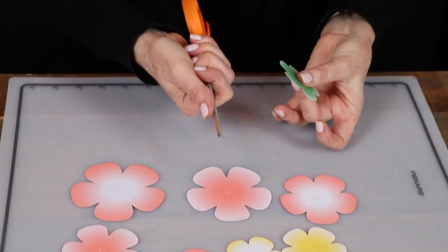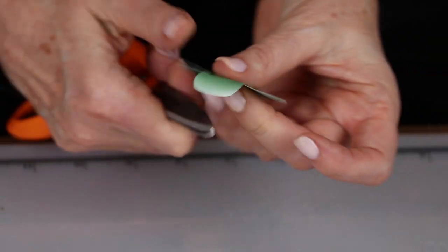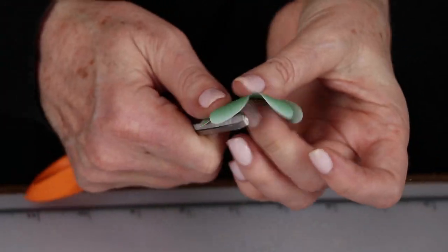The next thing you'll do is use the edge of your scissors and your thumb and curl all of the petals inward.